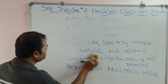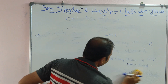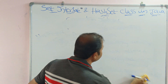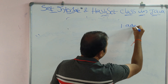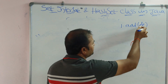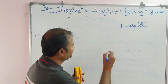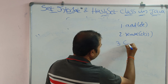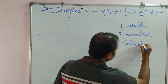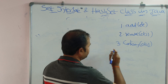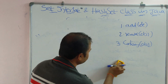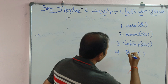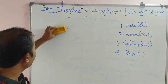Now let's see some important methods of HashSet along with a corresponding program. The first method is add(element). Next is remove(element). The contains() method is useful for searching operations. And we also have the size() method.